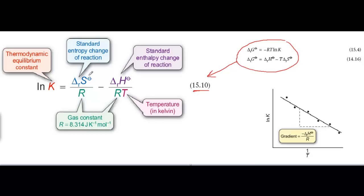Now let's look at the equation more closely. The delta S over R term will be constant for a given reaction, assuming that delta S doesn't change significantly over the temperature range involved. And the delta H over R term will also be constant for a given reaction, again assuming that delta H doesn't change over the temperature range involved. So the only variables in this equation are log K and T, and you can see that log K is proportional to minus one over T.